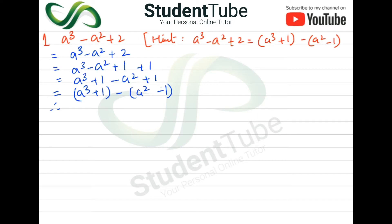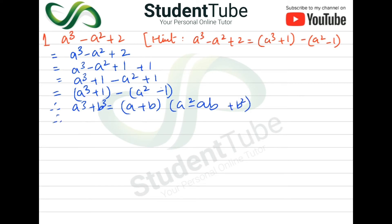We consider a cube formula and also we have a square minus one square. Here we apply two formulas: one will be a³ plus b³, and the second will be a² minus b². The formula for a³ plus b³ is equal to a plus b times a² minus ab plus b², and a² minus b² equals a plus b times a minus b.